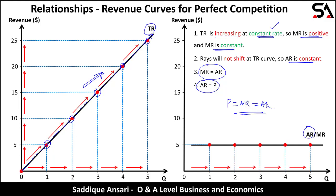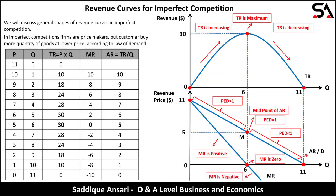A student asked about perfect competition. The instructor confirms that full details — such as features of perfect competition — will be discussed in the market structure topic. One feature is that in this market there are hundreds and thousands of sellers. Next we move on to the revenue curves for imperfect competition.